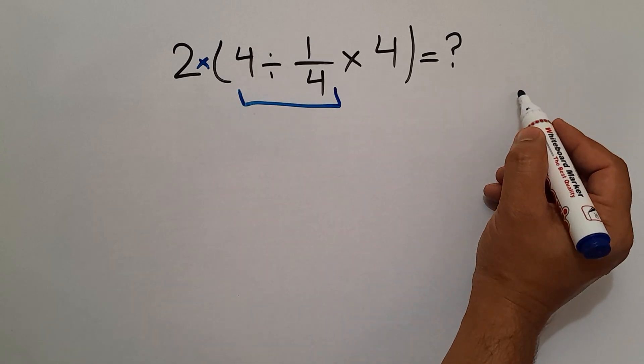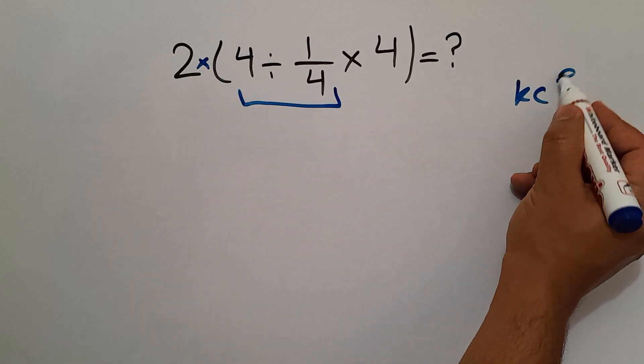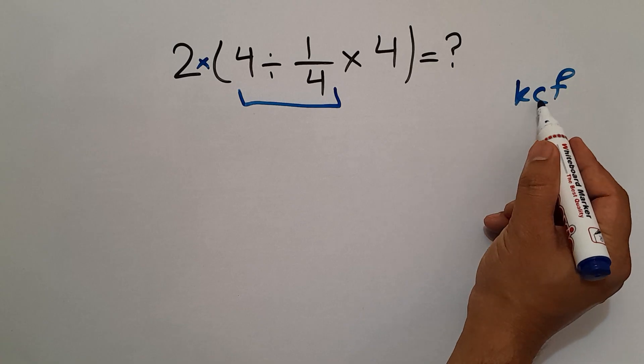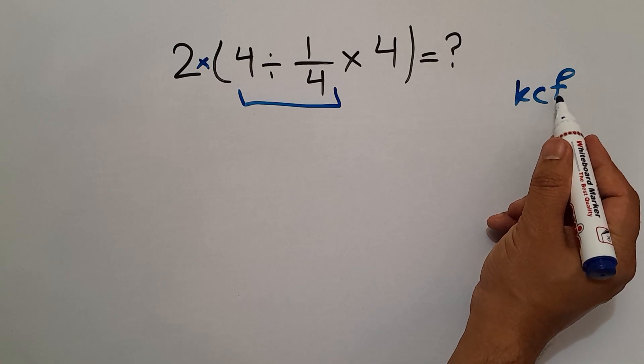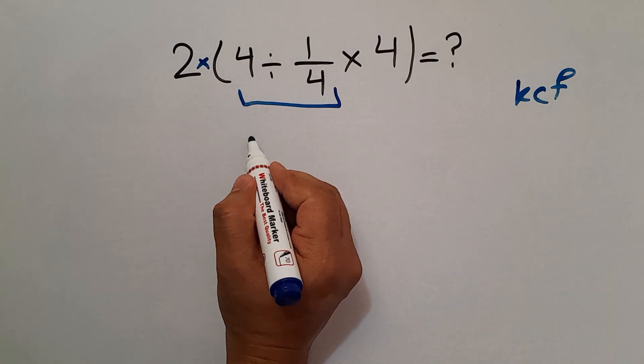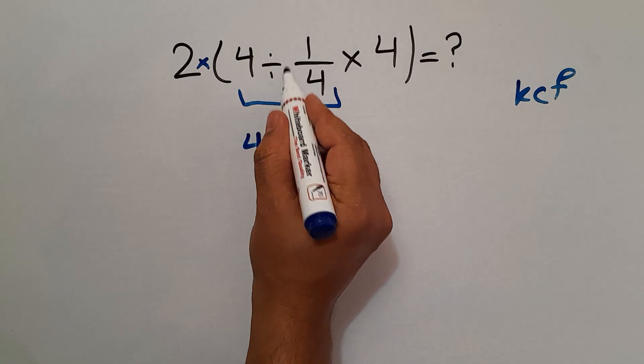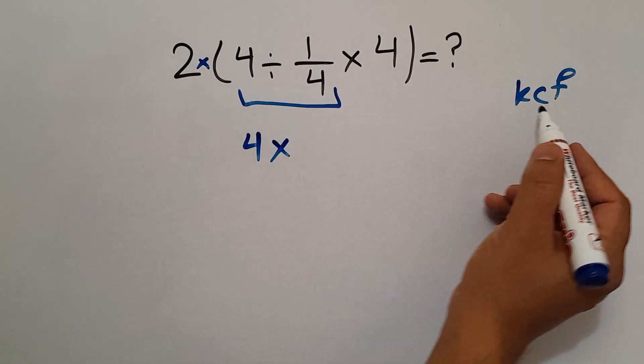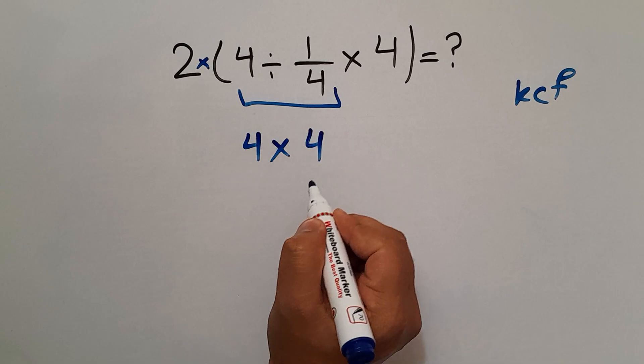According to the KCF rule, KCF - K stands for keep, C stands for change and F stands for flip. Keep the first fraction which is 4, change division to multiplication and flip the second fraction.